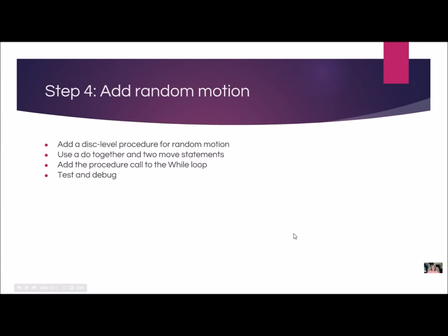Now we're going to do one more step: add random motion to make it more game-like. Many games have some kind of random motion, and we're going to start learning how to do that. We're going to have the hole move randomly. We're going to use a do together and two move statements with random numbers, add this procedure call to our while loop, and test and debug.